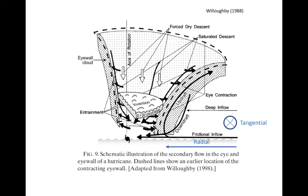Immediately along the inner edge of the sloped eye wall, saturated descent occurs. In the eye, forced descent occurs along a dry adiabat, forcing warming and stabilizing the atmosphere within the eye. As a result, deep convection is absent in the eye, although a shallow deck of stratiform cloud is present in the boundary layer. Light radially outward flow from the eye to the eye wall is present in the boundary layer and helps reinforce the convergence in the eye wall cloud.